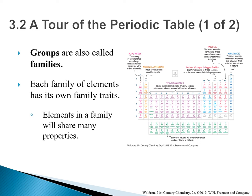The middle area of the periodic table from groups 3 to group 12 is the transition metals. From group 13 to group 16, chemists simply call them the boron family, the carbon family, the nitrogen family, and the oxygen family respectively. The two rows separated from the main periodic table are the lanthanides and actinides. All elements beyond element 92 are man-made and are not found in nature.